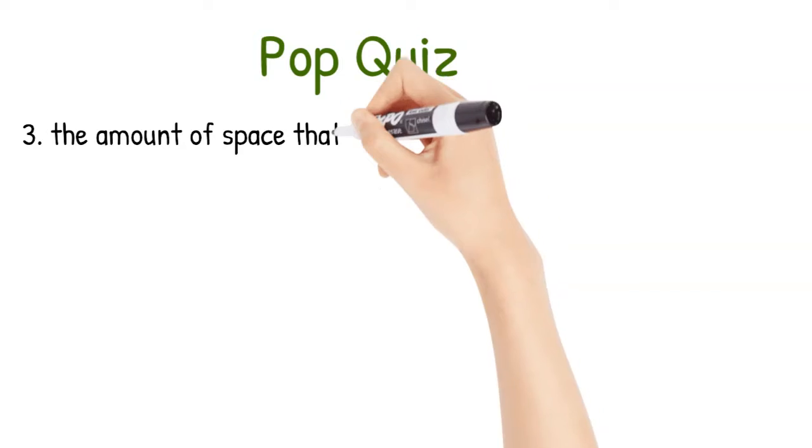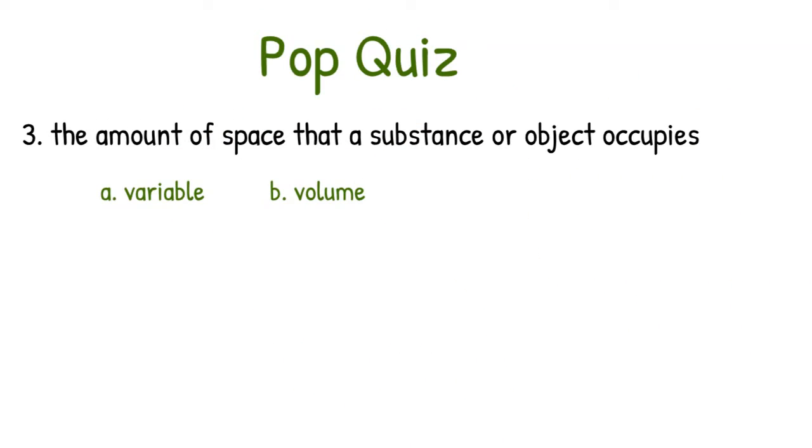Number three, the amount of space that a substance or object occupies. A, variable or B, volume?